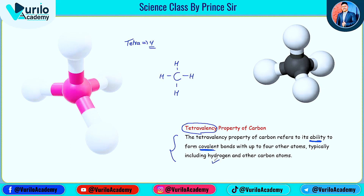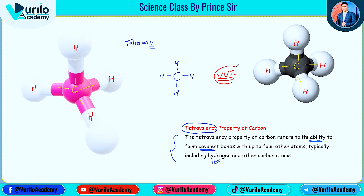Basically, we consider hydrogen in this chapter. Remember that each carbon atom will bond with four hydrogen atoms. This carbon atom will bond with four hydrogen atoms. This is the tetravalency property of carbon — it is very very important to know in this lecture.